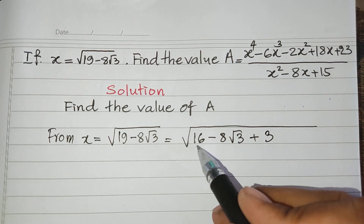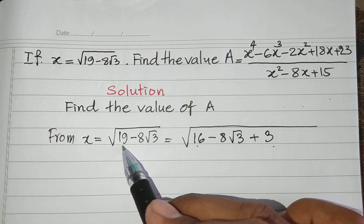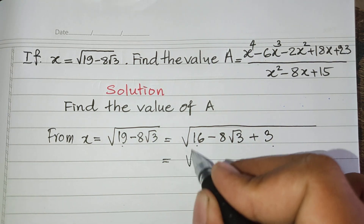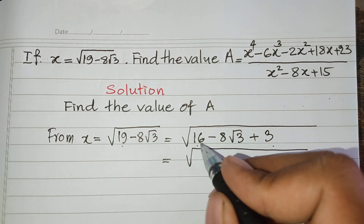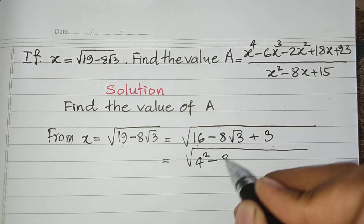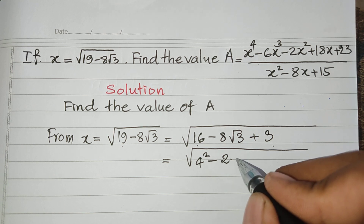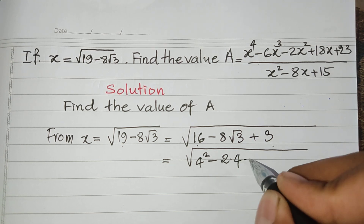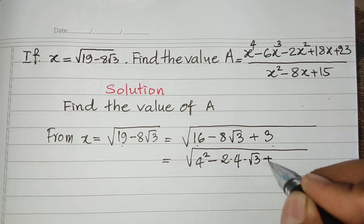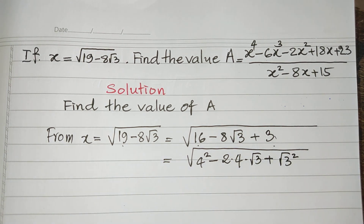Okay, now this I can rewrite as 4 squared, minus this h — I can rewrite it as 2 multiplied by 4, multiplied by square root 3, and this I can rewrite as square root 3 squared. This verifies the rule: a squared minus 2ab plus b squared.